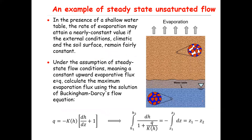I'm going to solve an example to show how to use the equation for steady state unsaturated flow. We consider the case of water evaporation from soil surface in the presence of a fixed water table. In the presence of a shallow water table, the rate of evaporation may attain a nearly constant value if external climatic conditions and the soil surface remain fairly constant—that means humidity, temperature, and so on are constant, and the water table is also constant.